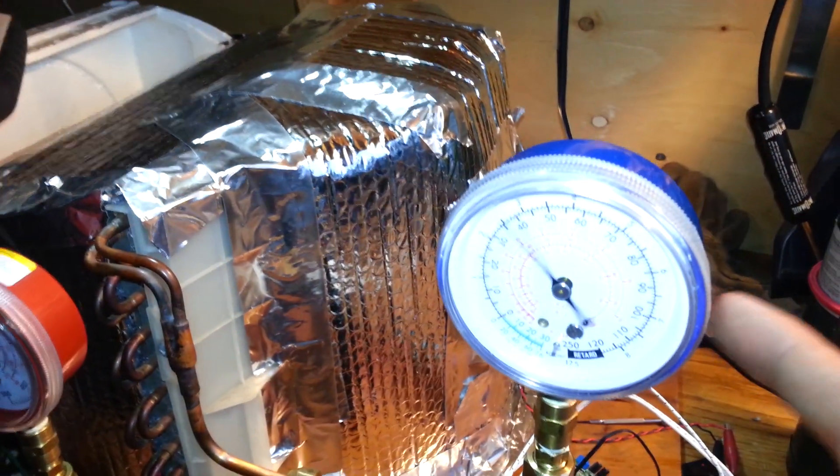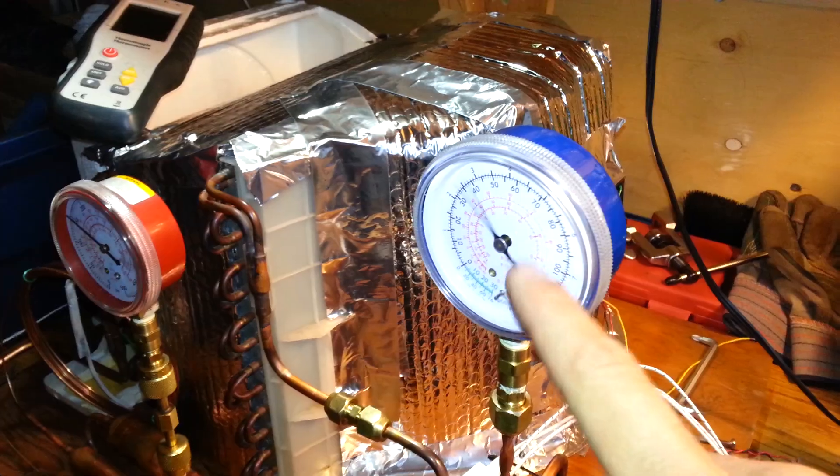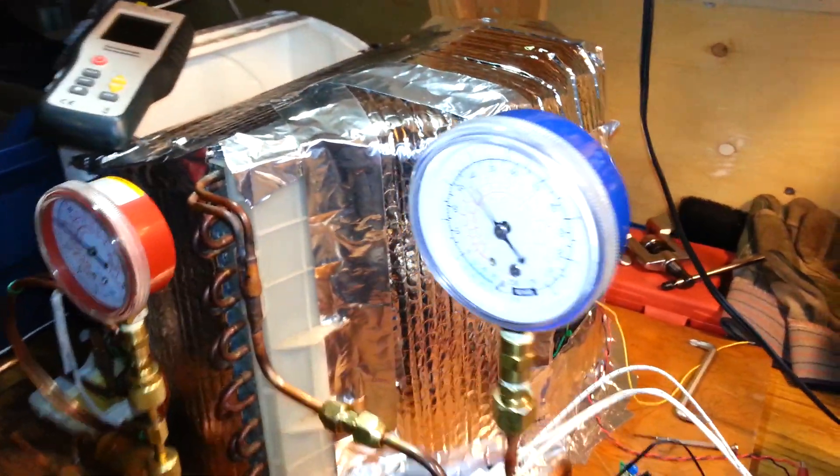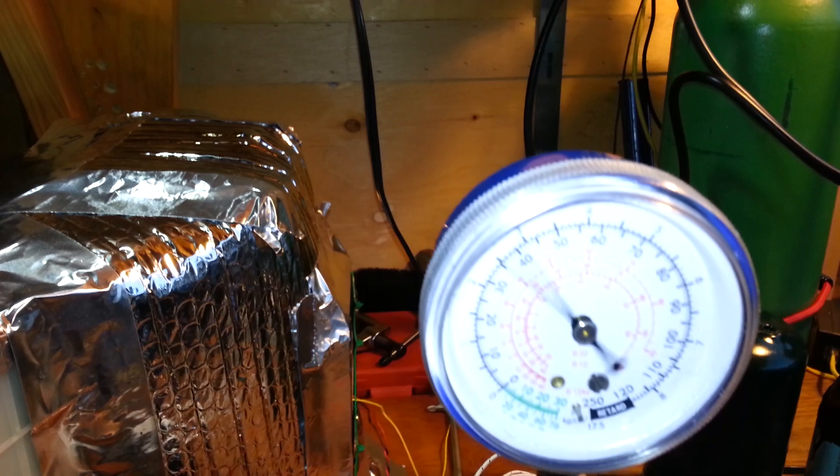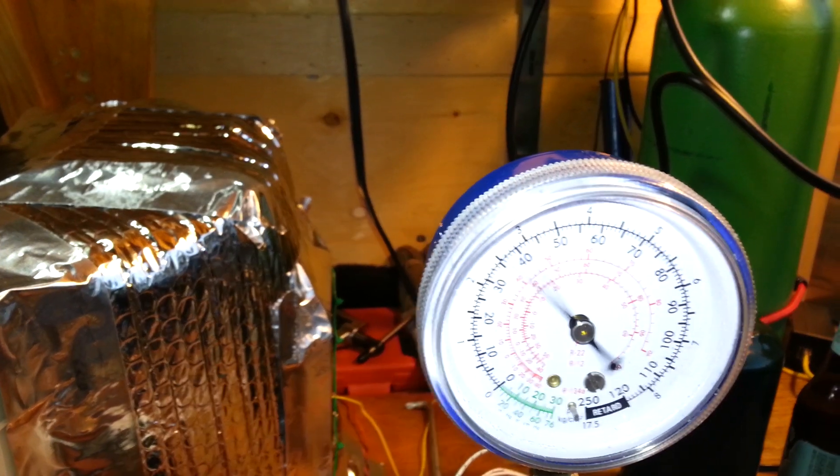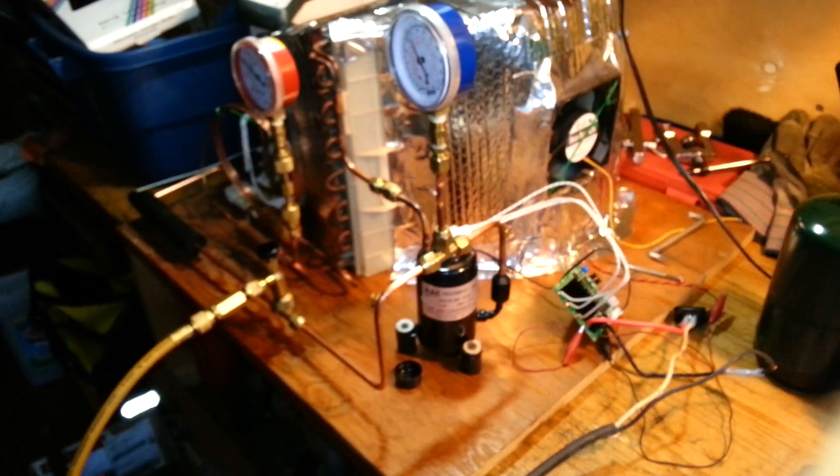Still got some fluttering. I might not be able to get rid of that entirely without going to a glycerin-filled gauge. But it's a hell of a lot better than it was. I was getting 30 psi or so in range, but it's relatively easy to read now. Thanks for watching.